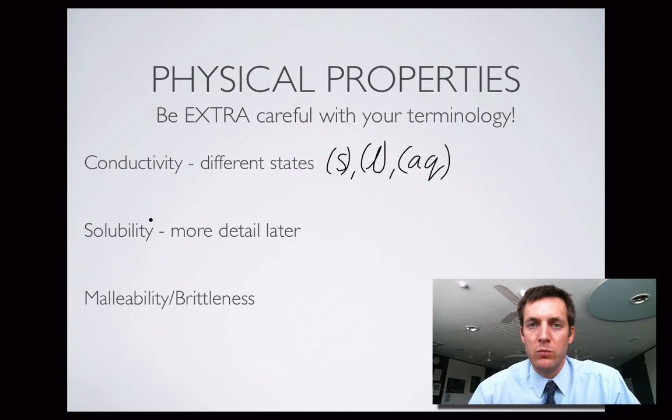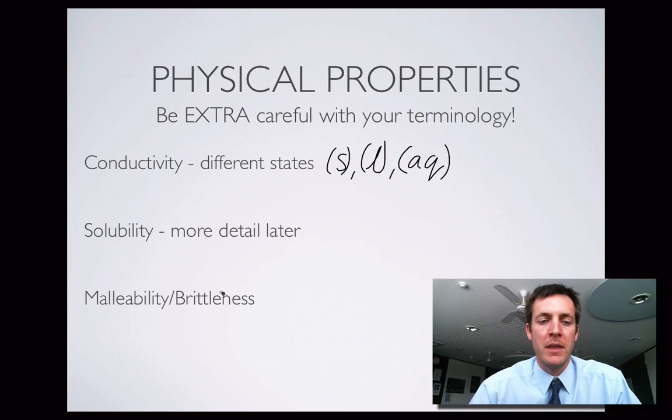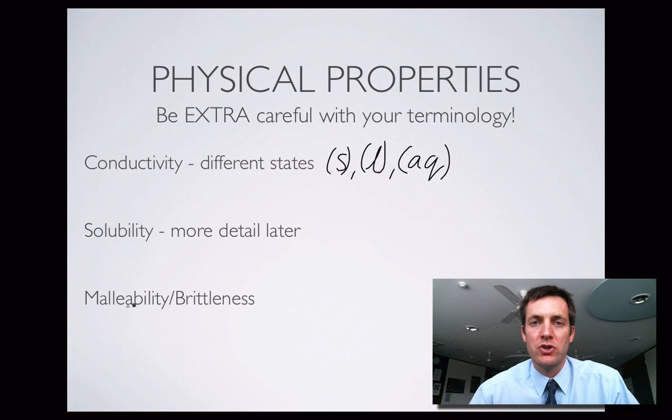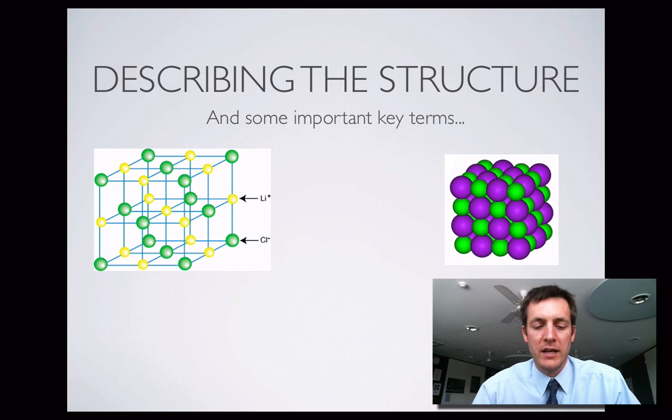They tend to be soluble in water, although that's not a rule that applies to every ionic solid. And there'll be more detail about that later if you're studying this in year 12, but in year 11 you don't really have to worry about it. And then finally, whether they're malleable or whether they're brittle, these are kind of opposites of one another. So malleability meaning you can change its shape without it breaking. If something's brittle, it means if you try and change its shape, it's going to break. So if we just look back at our previous slide and this ionic lattice.